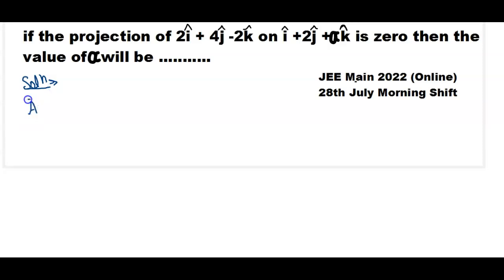Given vector A is equal to 2i cap plus 4j cap minus 2k cap and vector B is equal to i cap plus 2j cap plus alpha k cap.